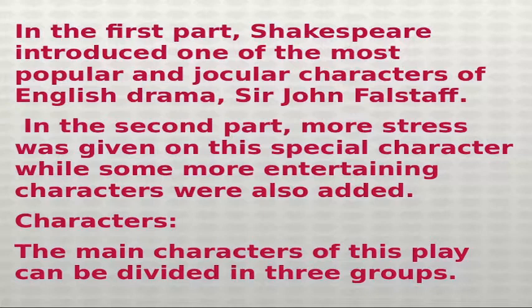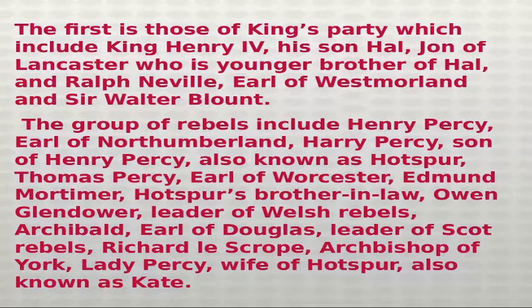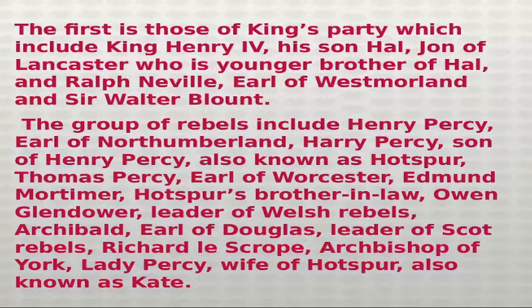The main characters of this play can be divided into three groups. The first is the King's party, which includes King Henry IV, his son Hal, John of Lancaster (younger brother of Hal), Ralph Neville the Earl of Westmoreland, and Sir Walter Blount. The group of rebels includes Henry Percy the Earl of Northumberland, Harry Percy (son of Henry Percy, also known as Hotspur), Thomas Percy the Earl of Worcester, Edmund Mortimer (Hotspur's brother-in-law), Owen Glendower the leader of the Welsh rebels, and Archibald the Earl of Douglas, leader of the Scots.